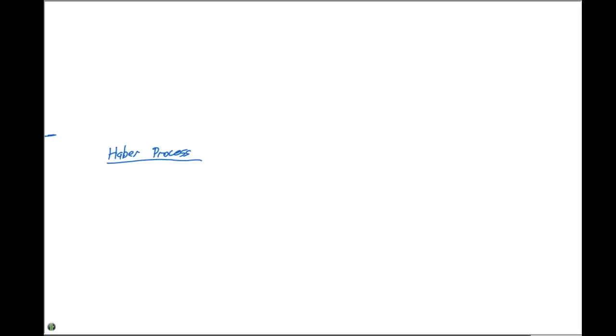The Haber Process was invented back around the World War I era. In World War I, they needed ammonia. A way to make ammonia is to take nitrogen gas and react it with three equivalents of hydrogen gas, and this forms an equilibrium with two equivalents of ammonia, all in the gas phase.